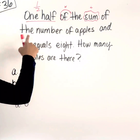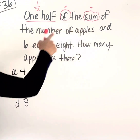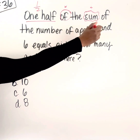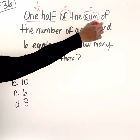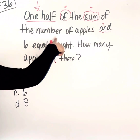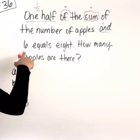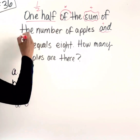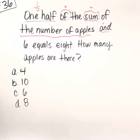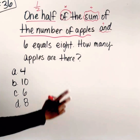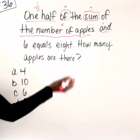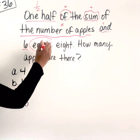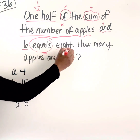It said 'the sum of the number of apples and six.' The word 'and' reminds us we're going to add. Whatever comes first is the first value, whatever comes after is the second value. 'The number of apples' means we don't know this value, so we're going to put a variable — I'll use X. Then we have six, then equals, so that's where our equal sign goes, and then we have eight.